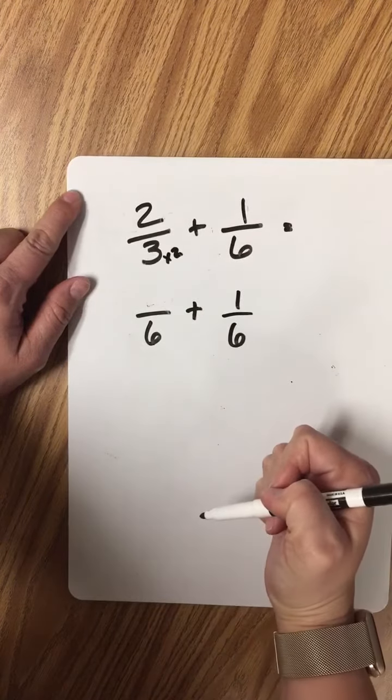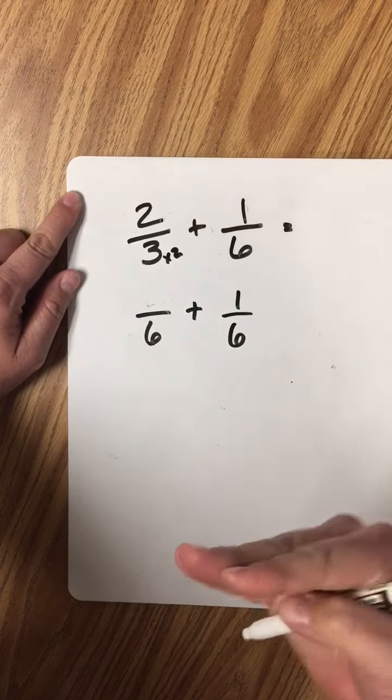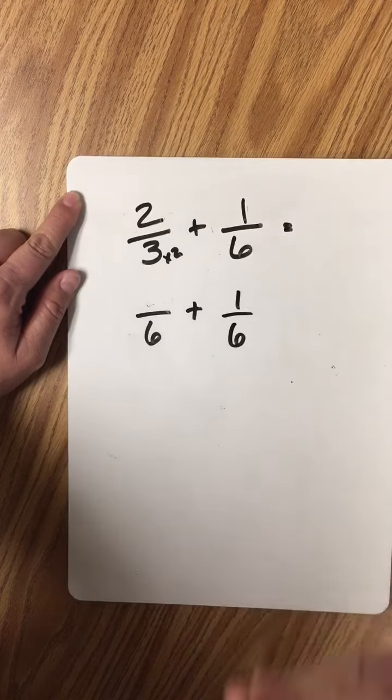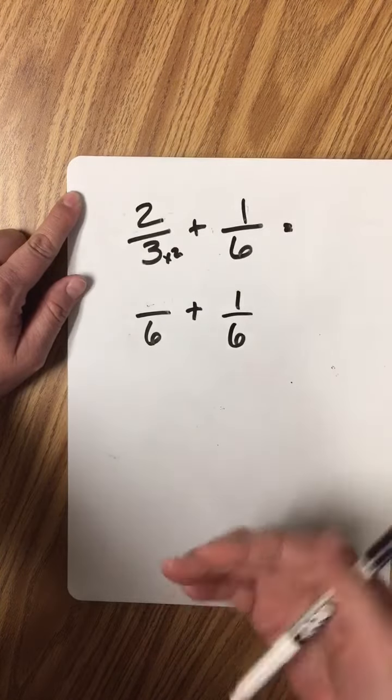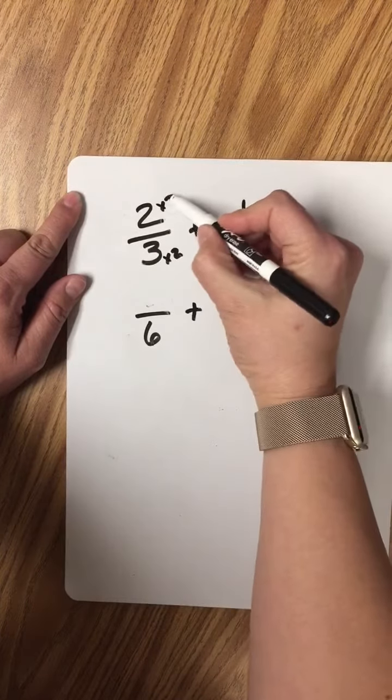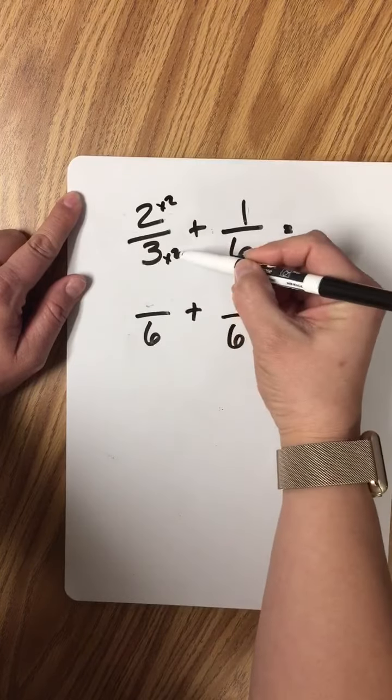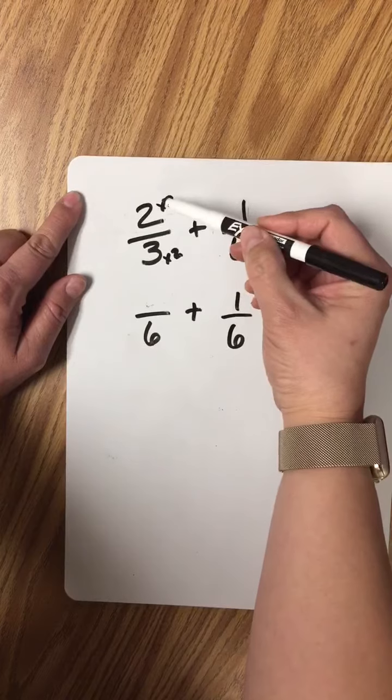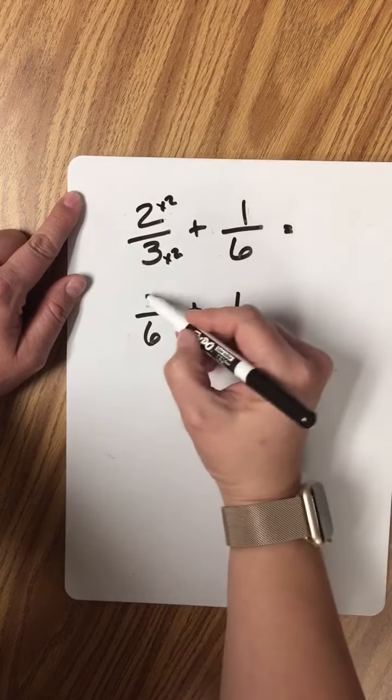The identity property of multiplication tells us that whatever you do to the bottom, you do to the top, and also the opposite. Whatever you do to the top of a fraction, you have to do to the bottom. So since I multiply the denominator by 2 to become a 6, I also multiply the numerator by 2 to become a 4.